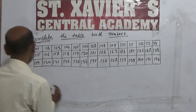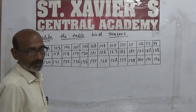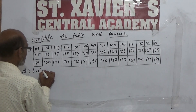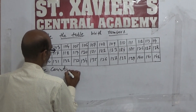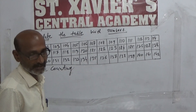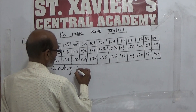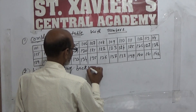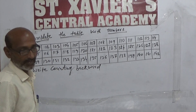Theek hai? Second question hai — second में क्या करेंगे? Right counting. Counting का spelling: C-O-U-N-T-I-N-G. Right counting, backward. B-A-C-K, W-A-R-D. Backward।